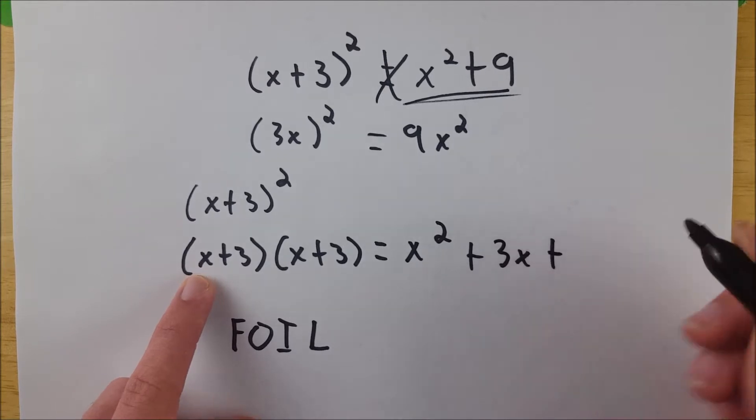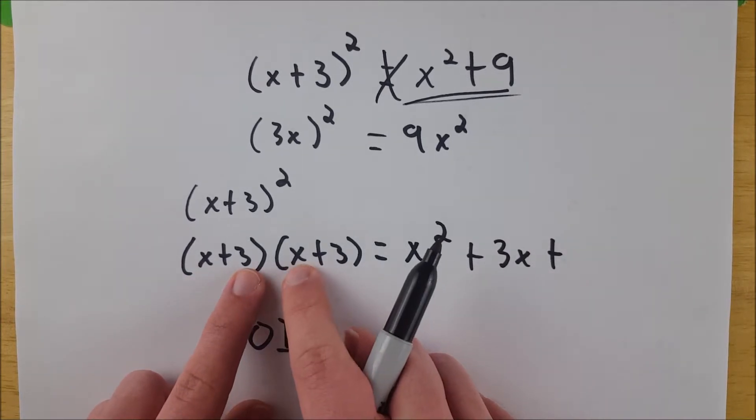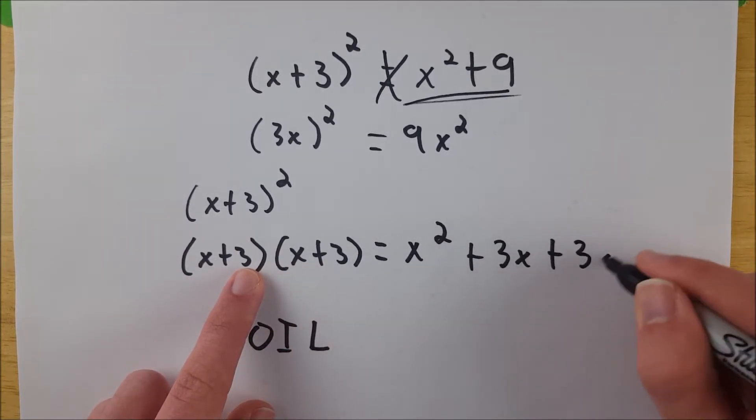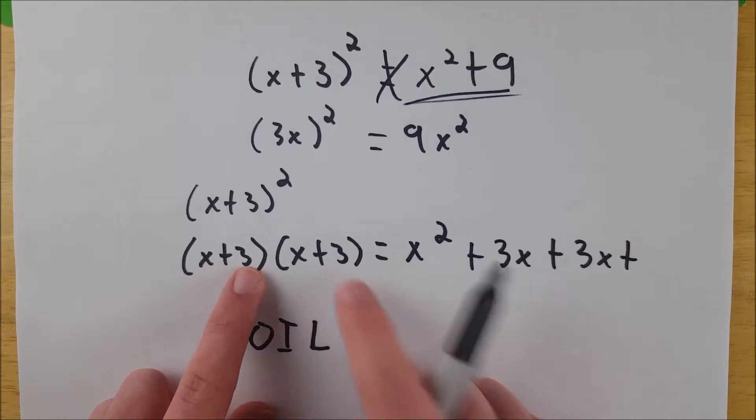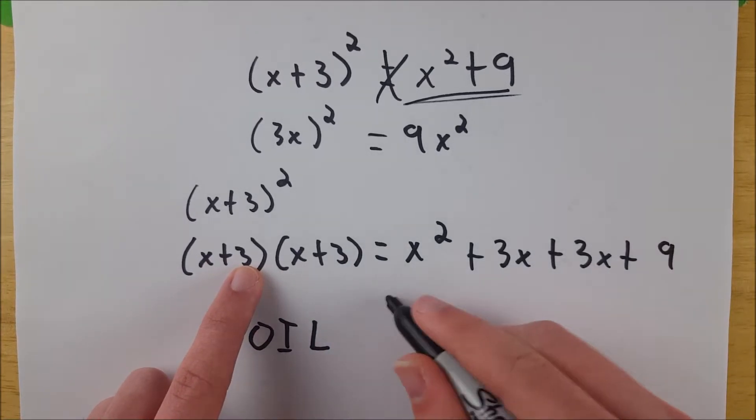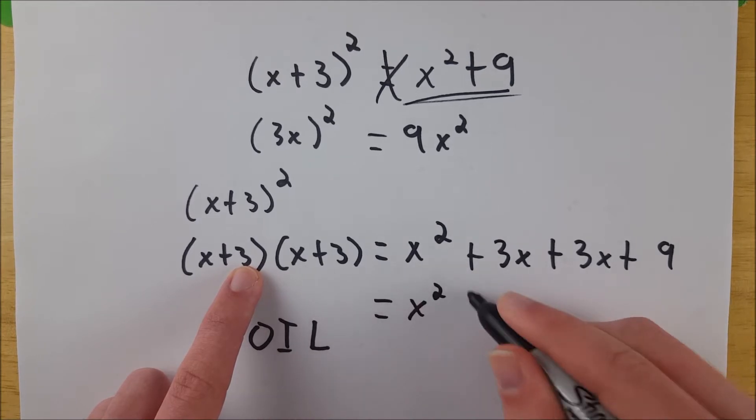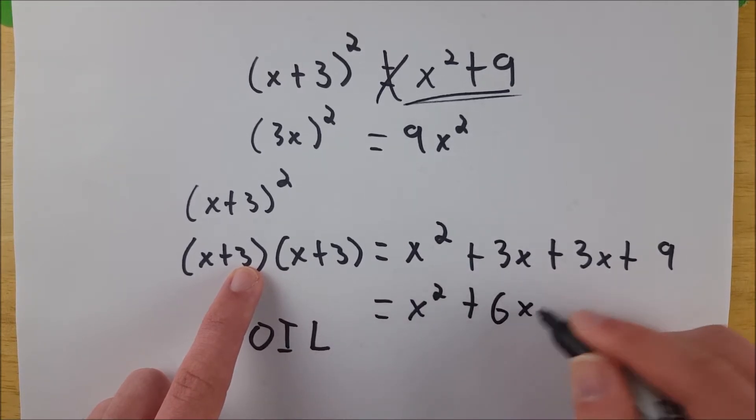Then we've got to multiply our inside terms. 3 and x. That's 3x. And then multiply our last terms. 3 and 3. That's 9. So this is equal, adding like terms, to x² + 6x + 9.